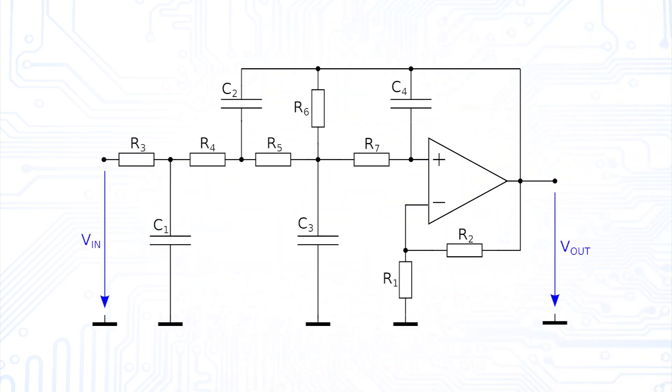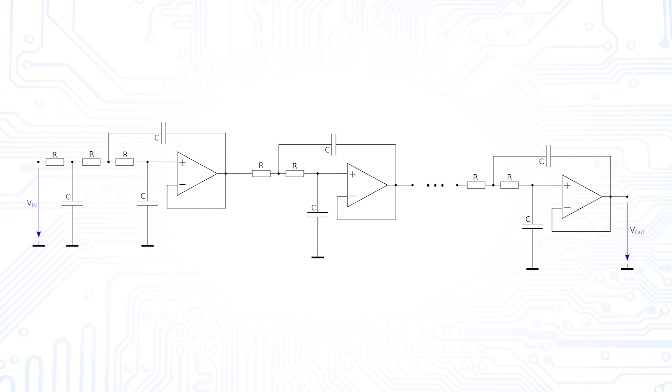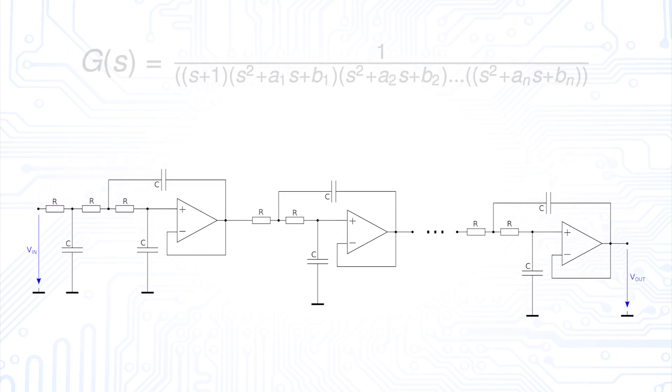For filters of higher order, there are multiple ways to do this. A fourth-order Sallen-Key topology could look like this. For even higher orders, it is common to simply connect several filters of the same topology in series.